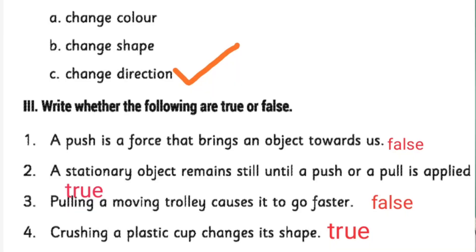Now let's discuss the third section — write whether the following are true or false. First: a push is a force that brings an object towards us — that is false. Second: a stationary object remains still until a push or a pull is applied to it — that is true.